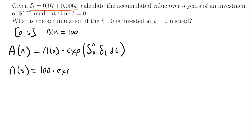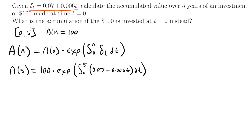So A(5) = 100 · exp(∫₀⁵ (0.07 + 0.006t) dt). We've substituted δ(t) = 0.07 + 0.006t into the formula. Now to solve for A(5) we have to evaluate this integral. Hopefully you're familiar with your integration techniques — this should be pretty straightforward.